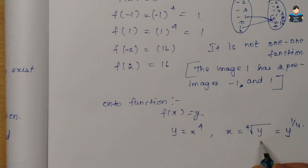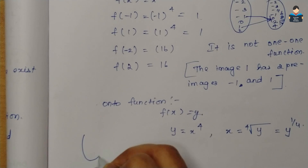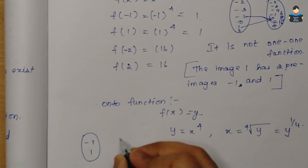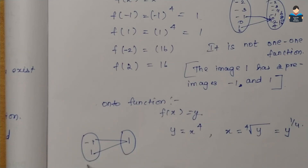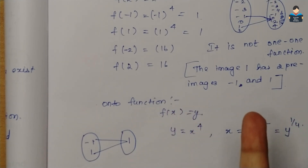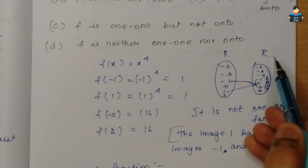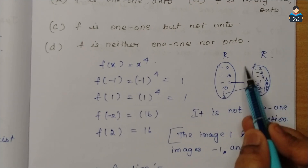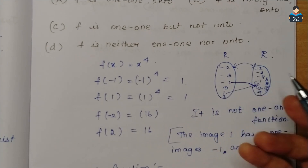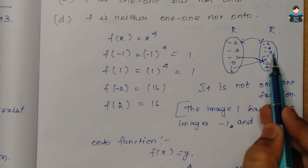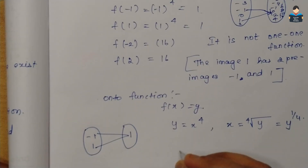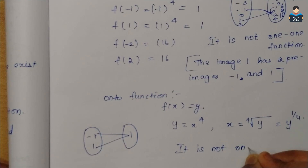The codomain is all real numbers. However, for negative values of y in the codomain, x = y^(1/4) is not a real number. So negative values in the codomain have no corresponding pre-image in the domain. Therefore f is not onto.